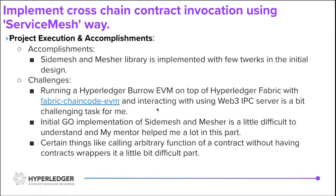The other networks are Hyperledger Besu and Ganache. Hyperledger Besu provides wallets and private keys so I can interact with the network. Another challenge was that the initial Go implementation of the chaincode was a bit tough to understand, but my mentor helped me a lot in that part.